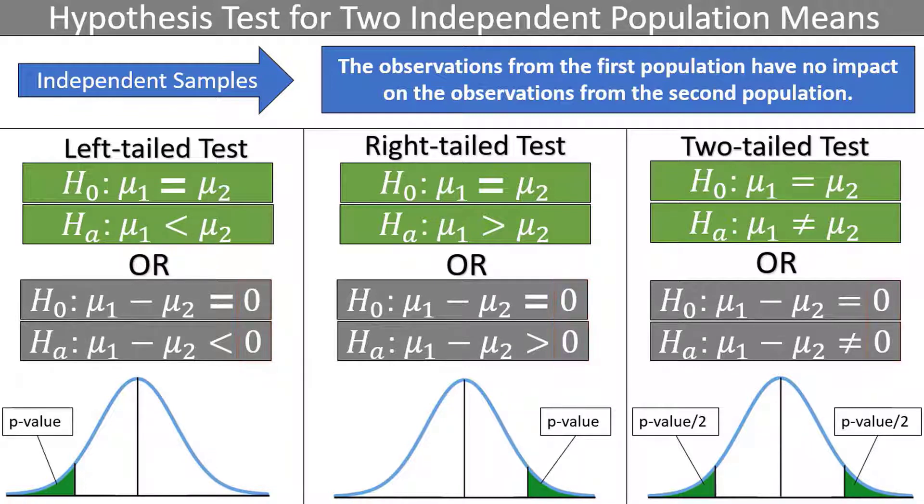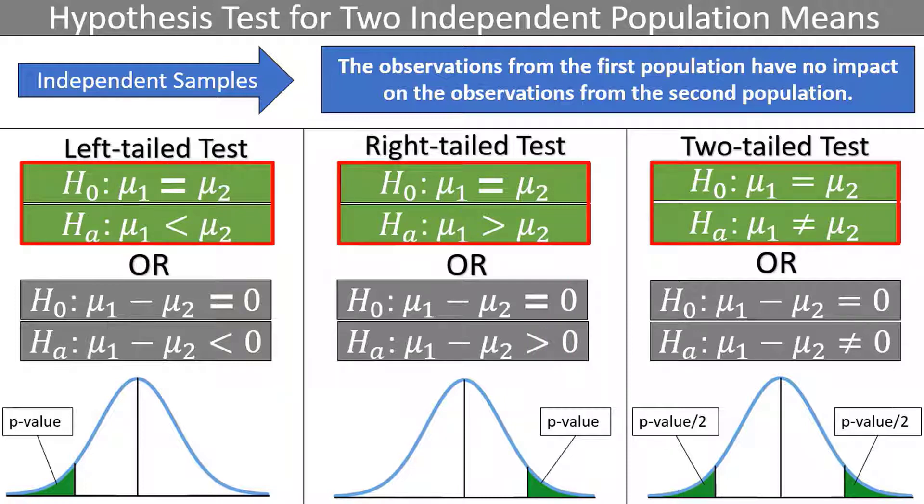For example, maybe instead of just thinking that there is a difference between mean 1 and mean 2, we think that mean 1 is larger than mean 2 by at least 10 units. Then we might use this setup for the hypotheses and replace the 0 with a 10. For our purposes, we will be using the first form of the hypotheses and will always assume that the hypothesized difference is equal to 0.